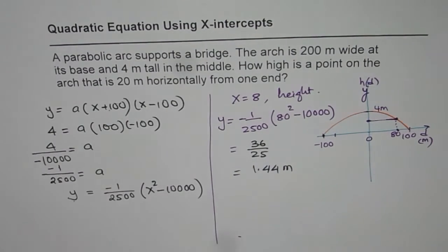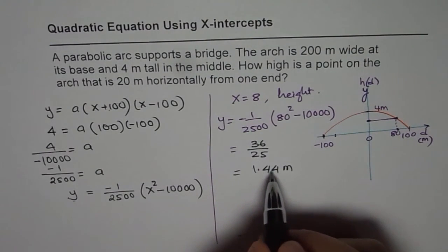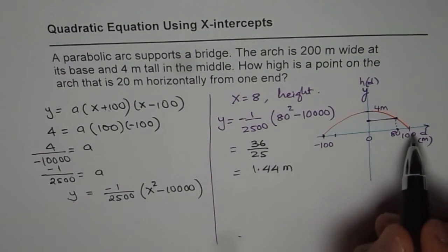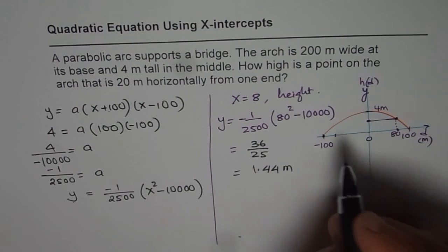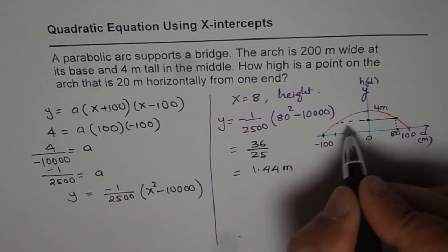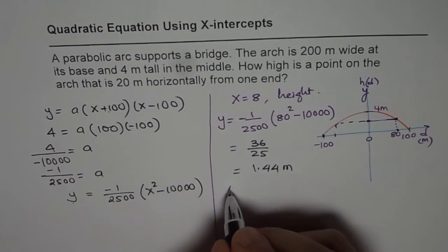So the height is going to be 1.44 meters when you are 20 meters away from any end. And from any end, so from the symmetry, this will also be the same. So the answer is, height will be 1.44 meters.